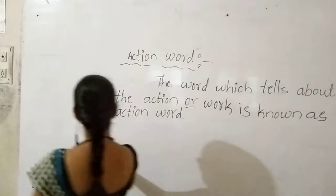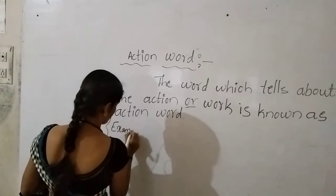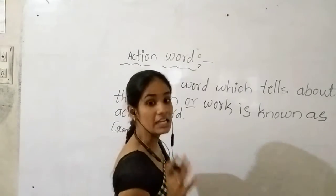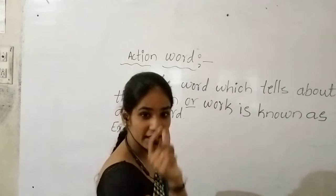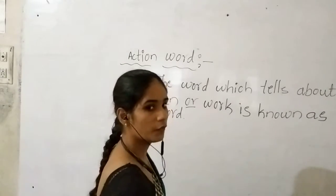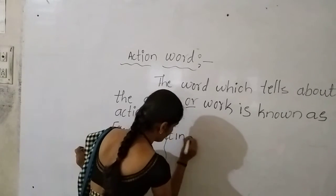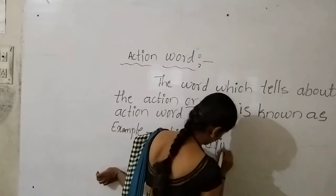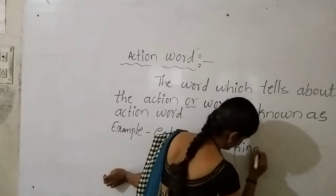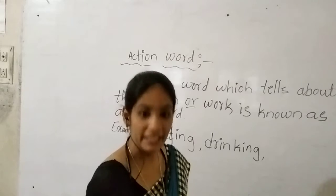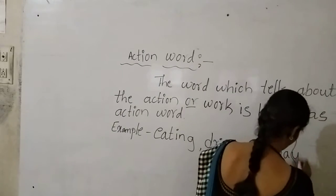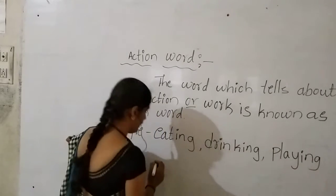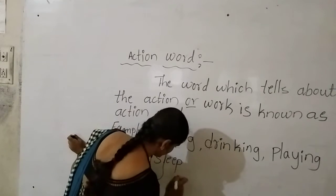Let us take examples. Now what you are doing? You are listening to the class, you are attending the class. So 'attending' is telling us about the verb. For example: eating, drinking, playing, sleeping, speaking, teaching, learning. Learning is also a work and action.